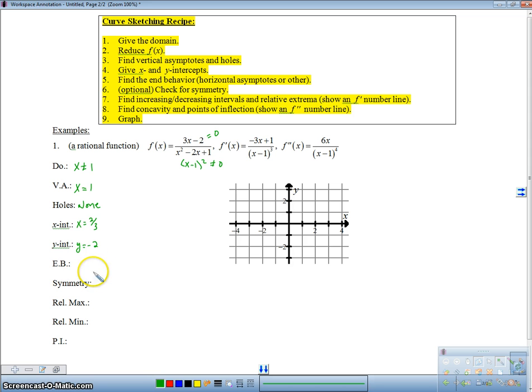End behavior - I like to put in terms of limits. The limit as x approaches positive infinity: what's going on? Are there any horizontal asymptotes? Yeah, there's a horizontal asymptote at y = 0 because the bottom has a higher power than the top. This is the same as x approaches negative infinity. You can put HA, y = 0.